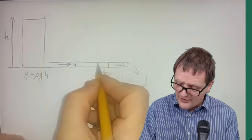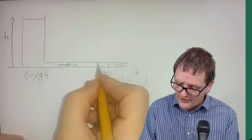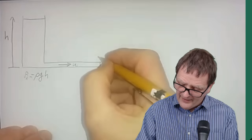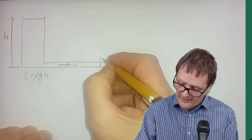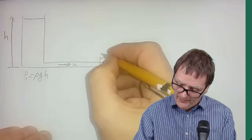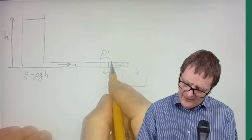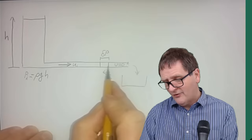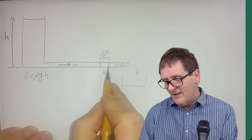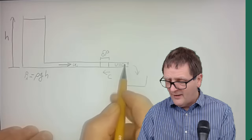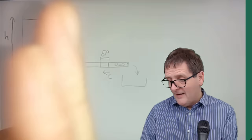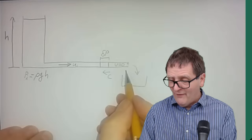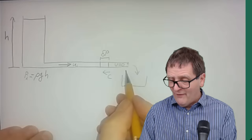That's a bit theoretical, assuming instantaneous closure. In practice it takes some time to close the valve, so instead of a single plane the change in velocity occurs over a section of pipe. Over this length there will be a pressure change delta P, with velocity going from the initial velocity on one side to zero on the other. The length of this wave front is determined by how long it takes to close the valve multiplied by the sonic velocity.